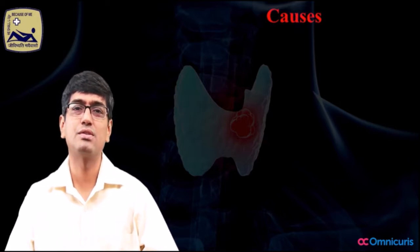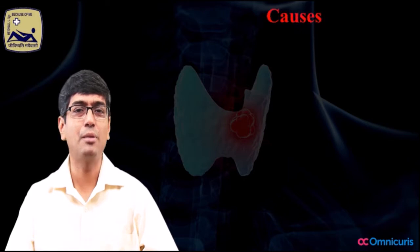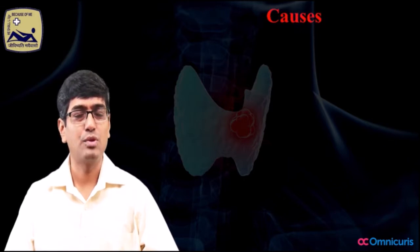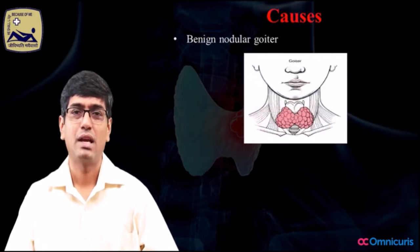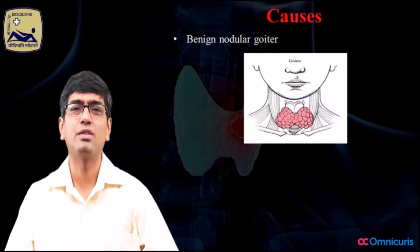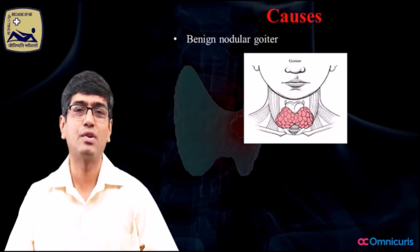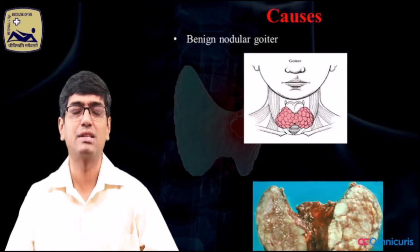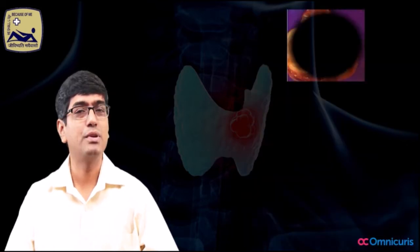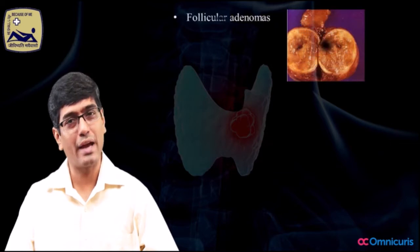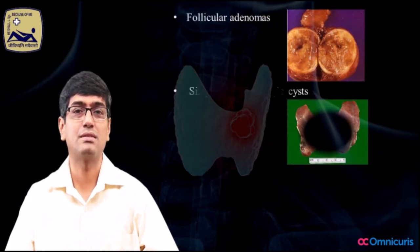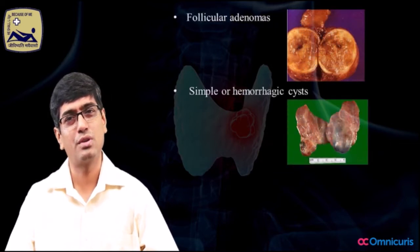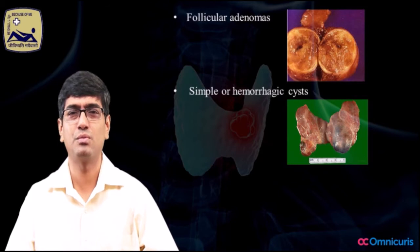The commonest causes of thyroid nodule disorders are benign, starting with benign nodular goiter, nodules occurring on the background of a chronic lymphocytic thyroiditis, there could be follicular adenomas, and there could be simple cysts with or without hemorrhagic transformations.